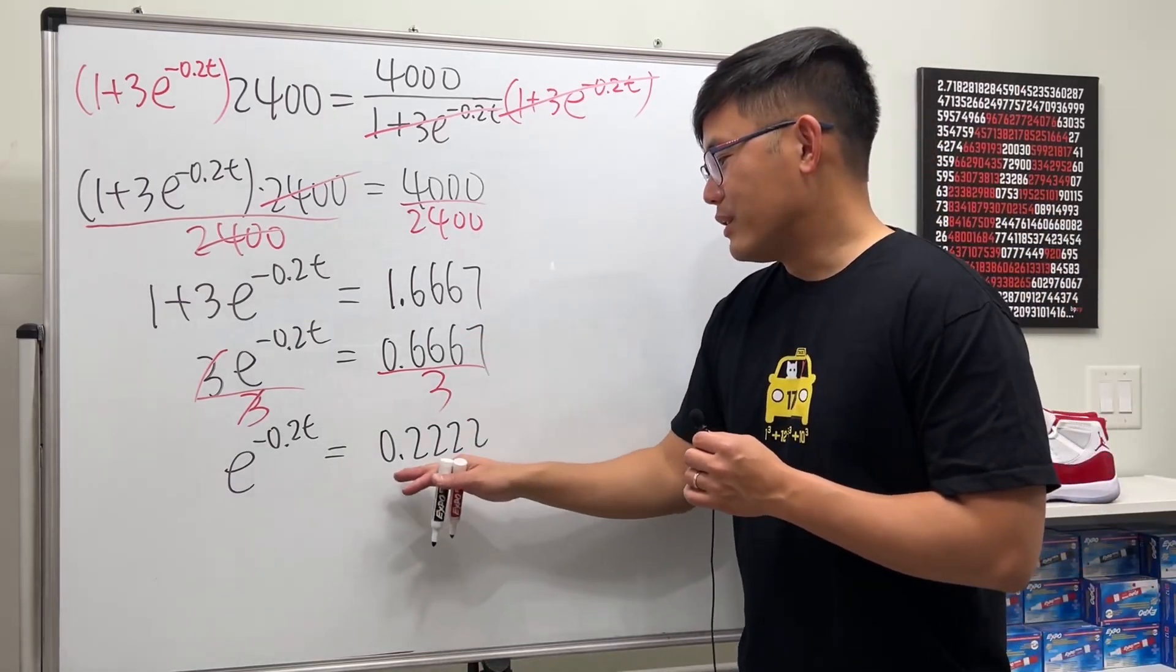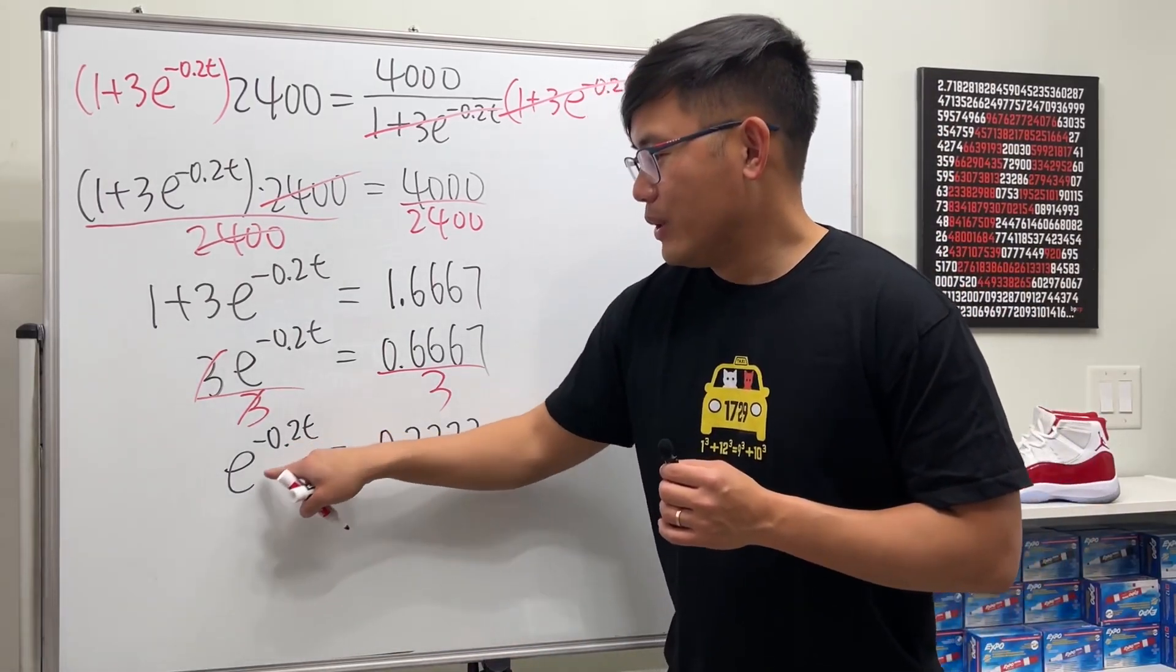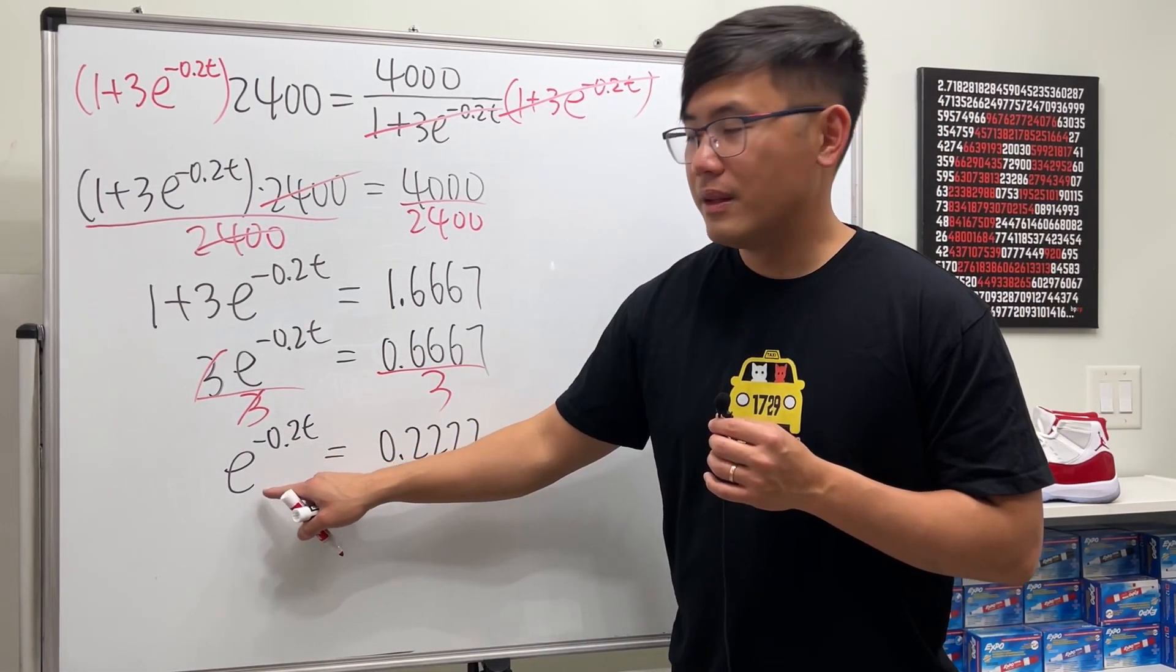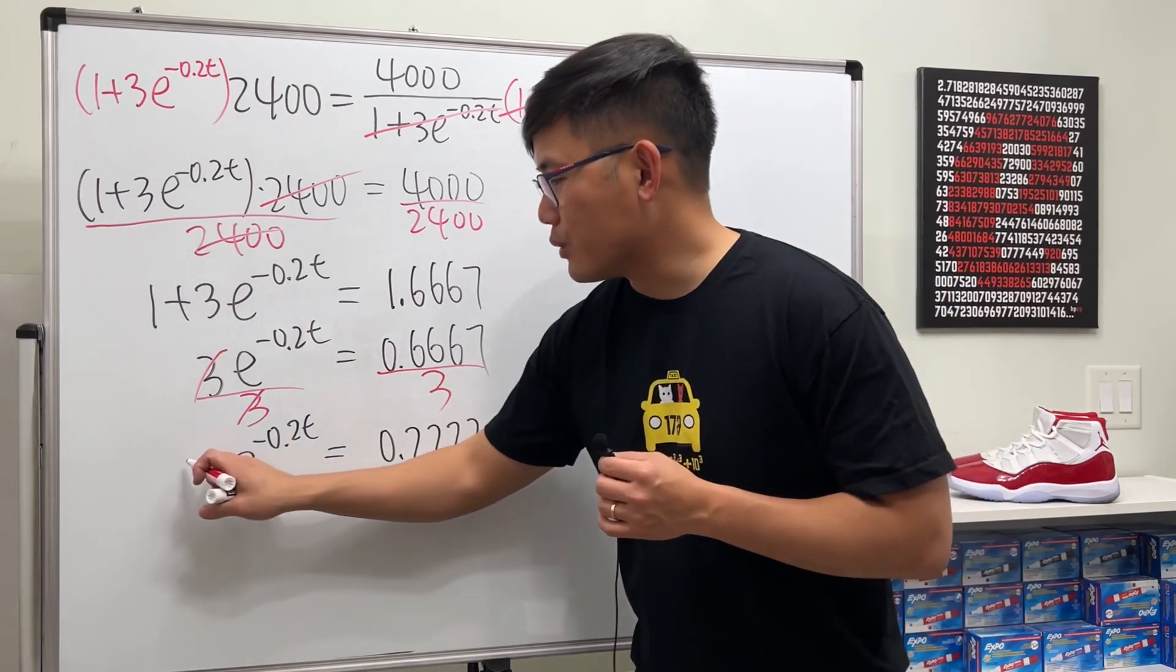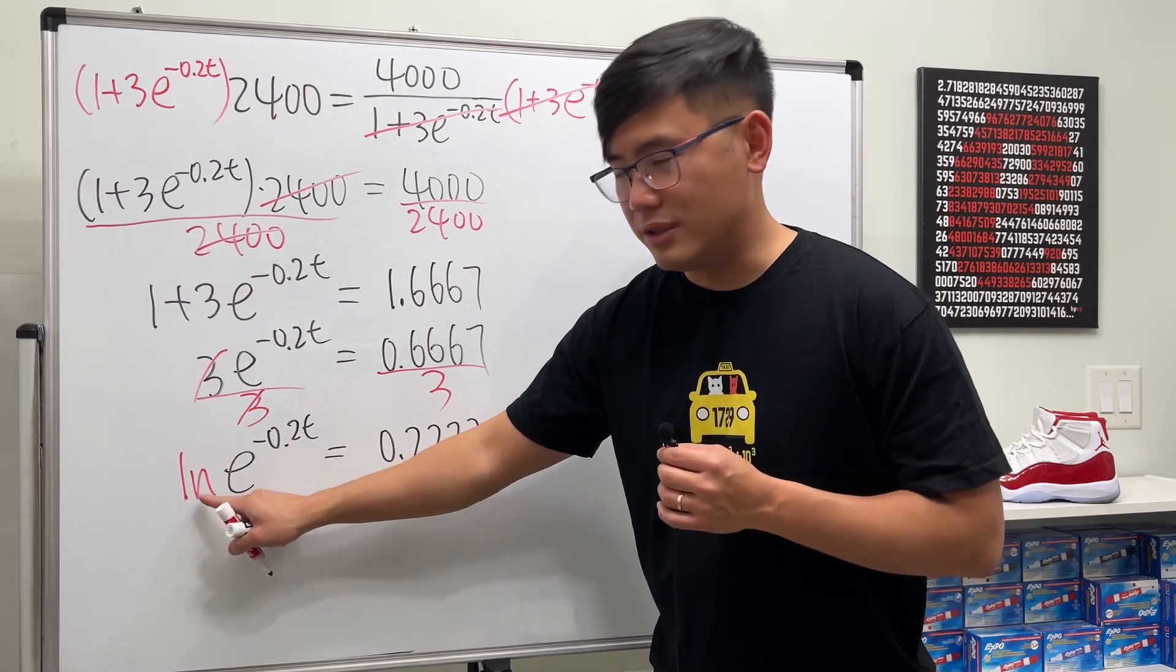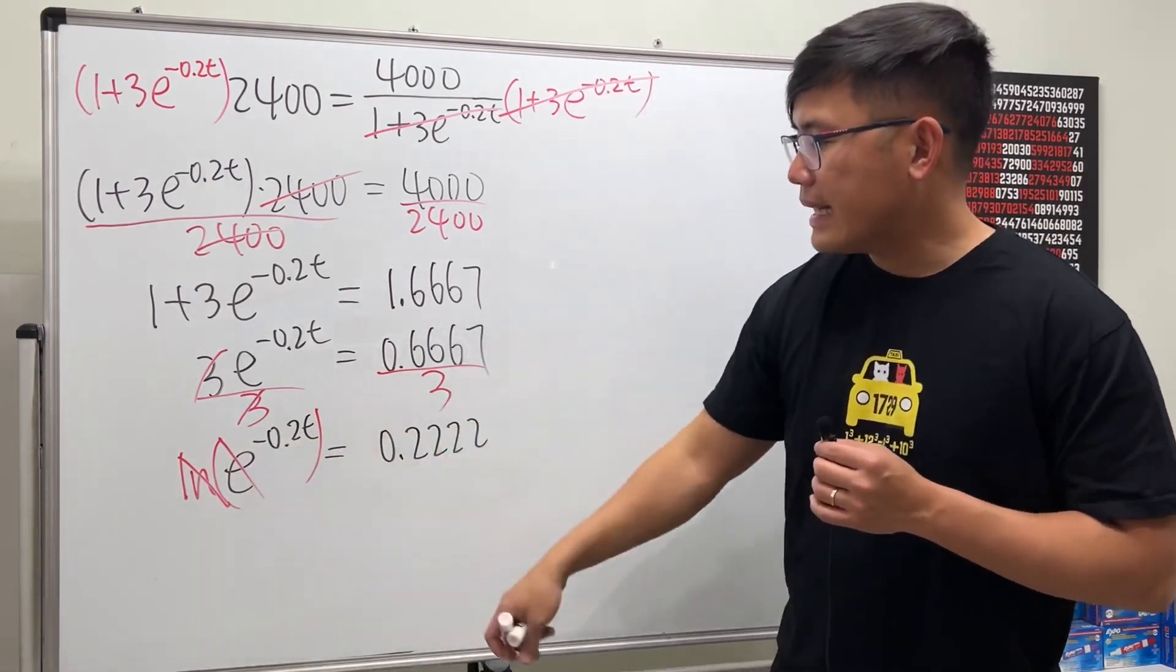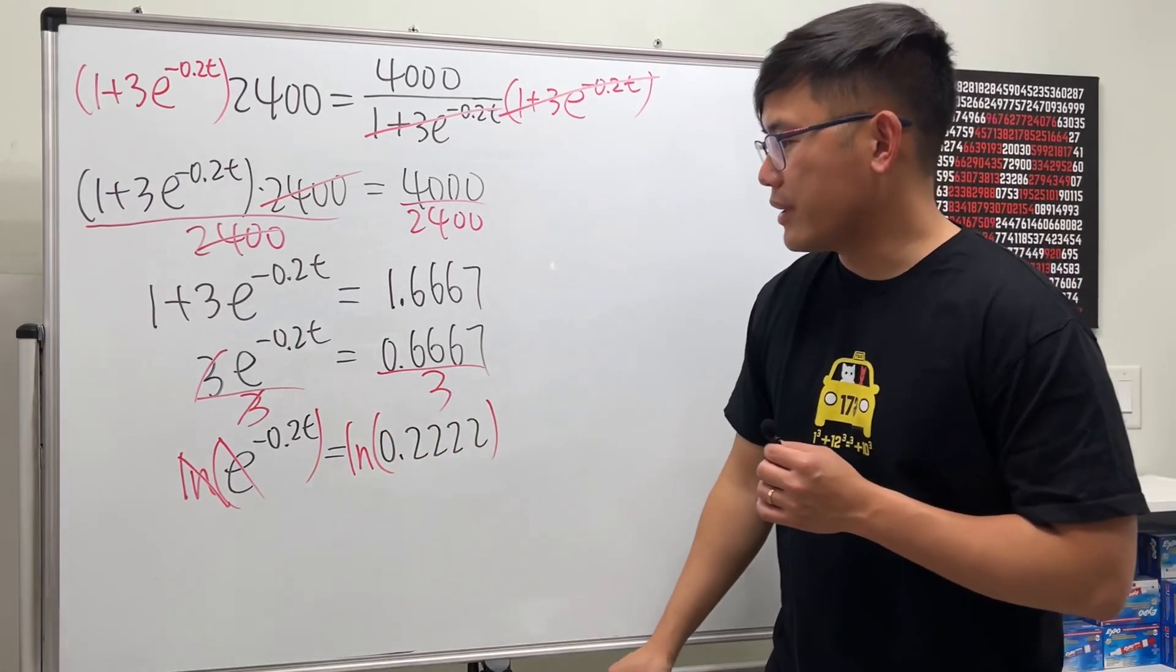We want to get rid of this e. This is exponential, so we use logarithm. Because the base is e, we take log base e, which is natural log. Take ln on both sides. That cancels, and we can put down this exponent right here, so we get negative 0.2t equals ln of 0.2222.